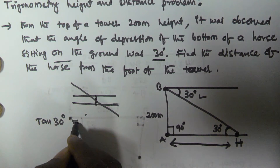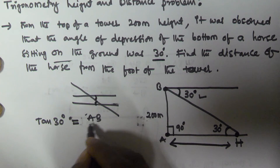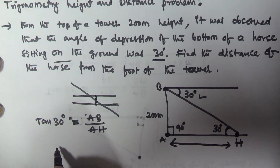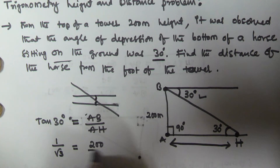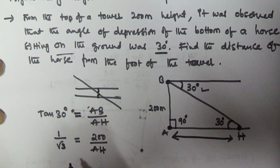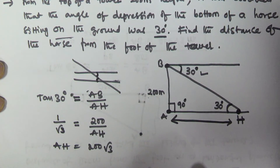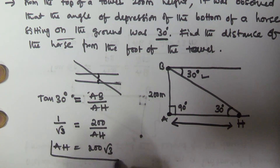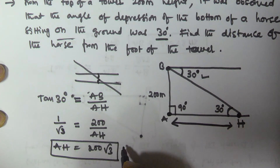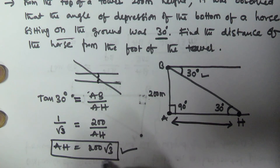By the definition of tan 30, tan 30 equals opposite side divided by base, which is AB divided by AH. So tan 30 = 1 over root 3, and AB is given as 200. Therefore AH = 200 into root 3 meters. So 200√3 meters is the distance of the horse from the foot of the tower.